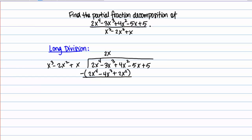Going through that subtraction: 2x to the fourth minus 2x to the fourth gives me zero — those terms should always go away if we do this correctly. Then I have x cubed, and 4x squared minus 2x squared gives me a positive 2x squared. I can bring down the other terms: minus 5x plus 5. Then I go through the process again, looking at these two terms. I'm asking how many times does x cubed go into x cubed — well, that's just 1.